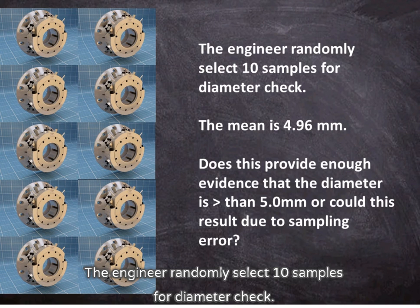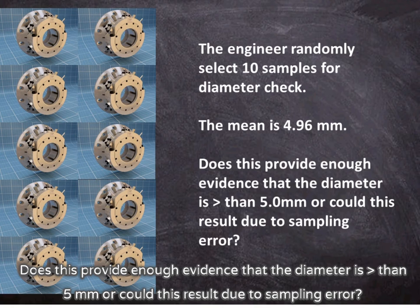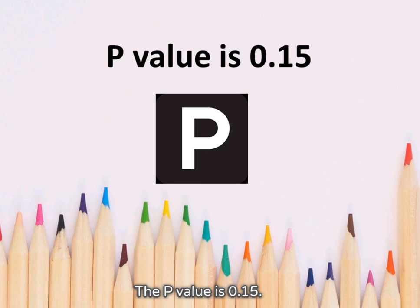The engineer randomly selects 10 samples for diameter check. The mean is 4.96 millimeters. Does this provide enough evidence that the diameter is greater than 5 millimeters, or could this result be due to sampling error? The p-value is 0.15.